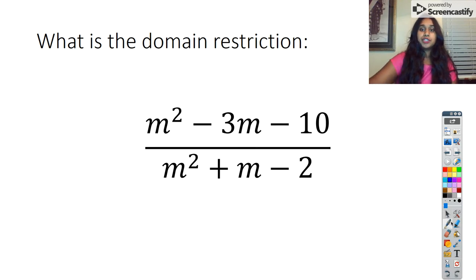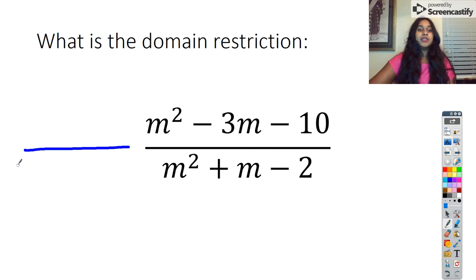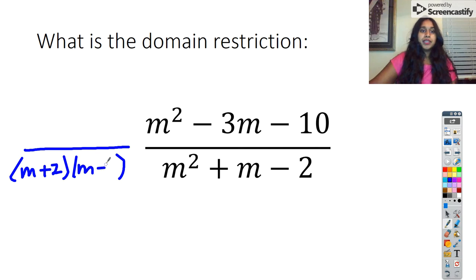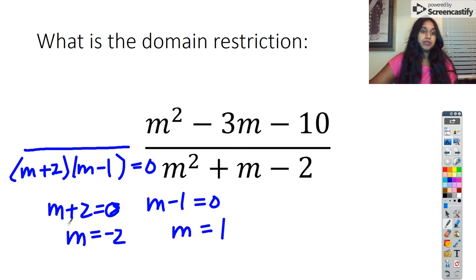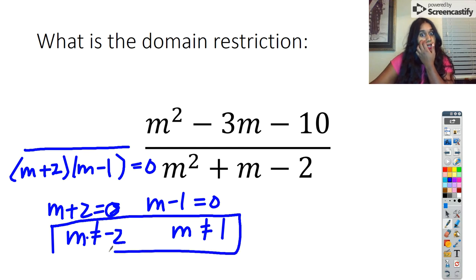The next question is another domain restriction. I only need to worry about factoring the bottom. My factors on the bottom are going to be N plus two and N minus one. We set each equal to zero: N plus two equals zero gives N equals negative two, and N minus one equals zero gives N equals positive one. These are my domain restrictions — this is where N cannot equal those values.